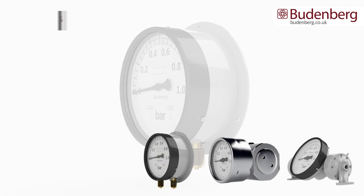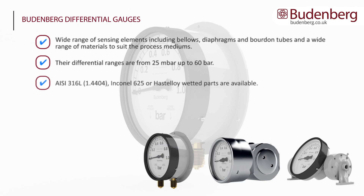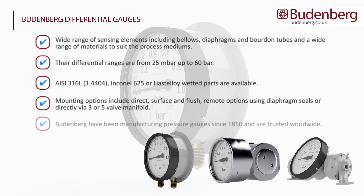The advantages of Budenberg differential gauges: they have a wide range of sensing elements including bellows, diaphragms, and Bourdon tubes, and a wide range of materials to suit the process mediums. Their differential ranges are from 25 millibar up to 60 bar. A wide range of pressure elements are available. Mounting options include direct, surface, and flush. Remote options using diaphragm seals or directly via 3 or 5 valve manifold. Budenberg have been manufacturing pressure gauges since 1850 and are trusted worldwide.